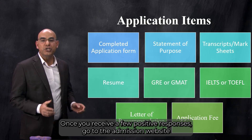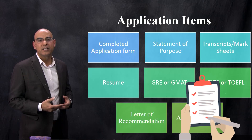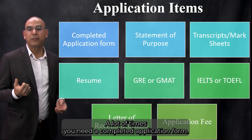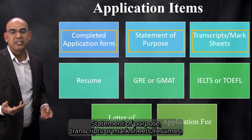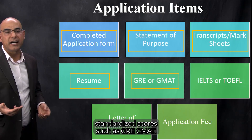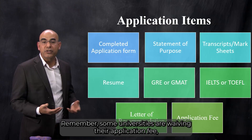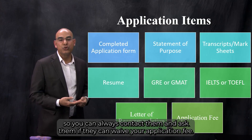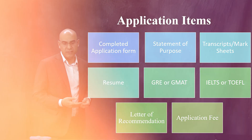Once you receive a few positive responses, go to the admission website and make yourself familiar with all the items you need to complete the application. A lot of times you need a completed application form, statement of purpose, transcripts or mark sheets, resume, standardized scores such as GRE, GMAT, IELTS, or TOEFL, letters of recommendation, and an application fee. Remember, some universities are waiving their application fee, so you can always contact them and ask if they can waive it.